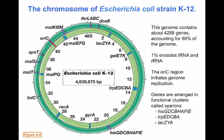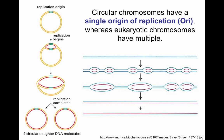When we think about how the chromosome replicates, the circular chromosome has a single origin of replication called the ORI, whereas eukaryotic chromosomes have multiple origins to allow for fast replication of the larger genomes. Starting at the origin, replication generates a replication fork, creating a theta structure, and eventually the two daughter chromosomes are separated once replication stops.